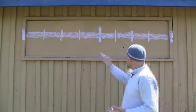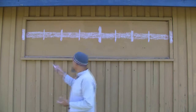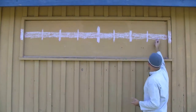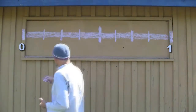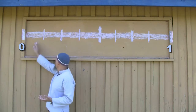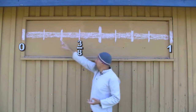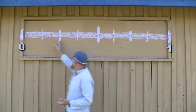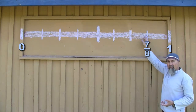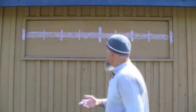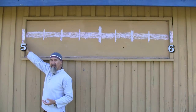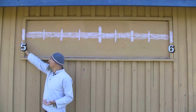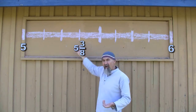Now we have a line cut into eight pieces. If this end is zero, then three-eighths would be at the third mark — three parts of the whole. Seven-eighths would be the seventh mark. If you had a number like five and three-eighths, this end would be your five, and five and three-eighths would be three marks past five. Five and seven-eighths would be seven marks past five.